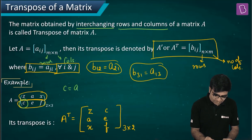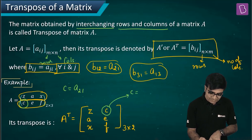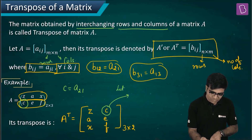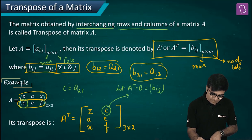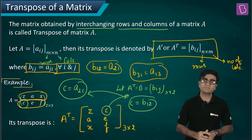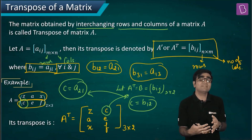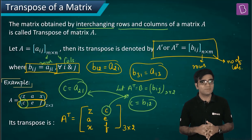Now the first row z, a, x becomes the first column, and the second row c, e, f becomes the second column. Looking at element c: in terms of aij, c is nothing but a21. If I call A transpose as B, then this c is b12. So a21 equals b12 — confirming that bij equals aji for all i and j.